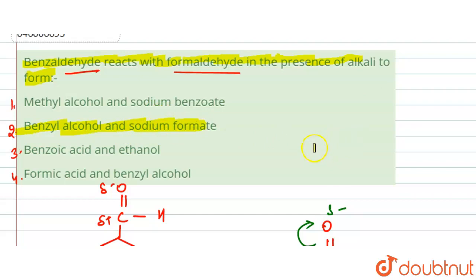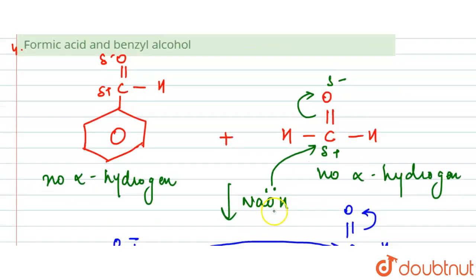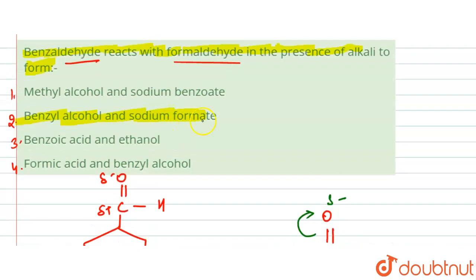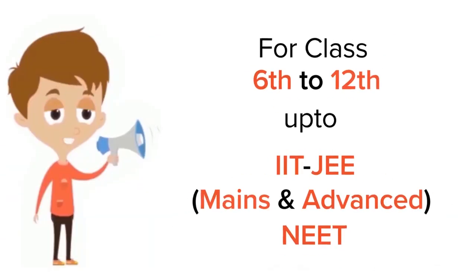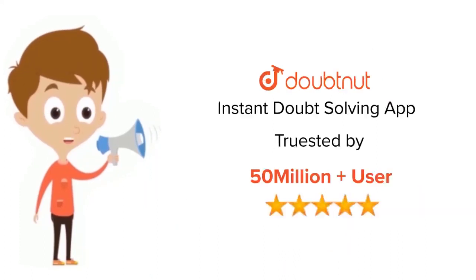Our answer is benzyl alcohol and sodium formate — option 2 is correct. On the NaOH oxygen, it has six valence electrons total, with two shared, leaving four, which supports the mechanism shown. Option 2 is the correct answer.